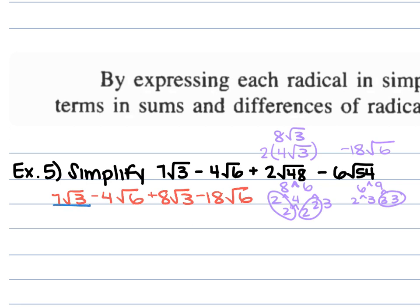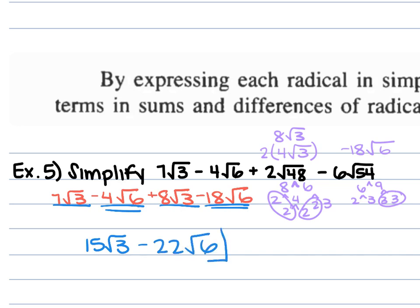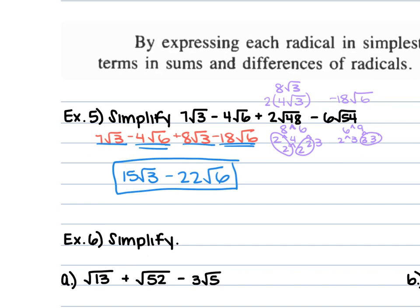The 7 square root of 3 and the 8 square root of 3 pair up: 7 plus 8 is 15, keep the square root of 3. The negative 4 square root of 6 and the negative 18 square root of 6 are like terms: keep the sign, add the numbers — that's negative 22 square root of 6. So the solution is 15 square root of 3 minus 22 square root of 6.